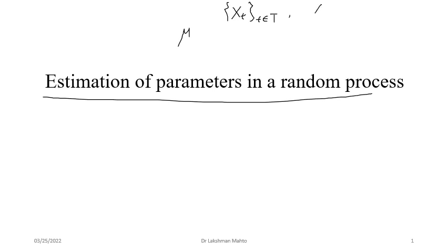We can use various notations. The randomness is sourced from the outcome of the random experiment — omega. For each value of t, x(t) would be a function of omega, and jointly we can say that x is a function of both t and omega. Omega is the source of randomness and t talks about evolution — both arguments have a very important role in defining a random process.